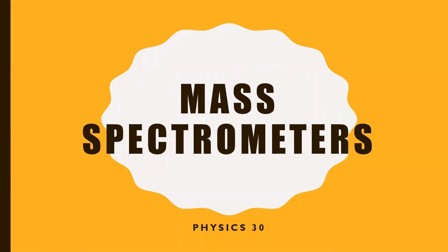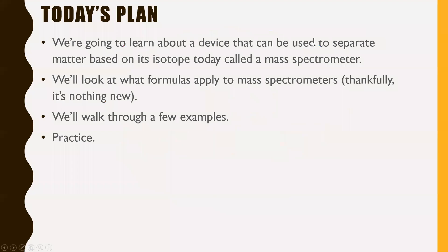Today we're going to move on to a concept called mass spectrometers. These are quite useful devices. We're going to learn about a device that can be used to separate matter based on its isotope — called a mass spectrometer. Isotopes are the same element but with a different number of neutrons. Today we're going to talk about how to separate and organize them.